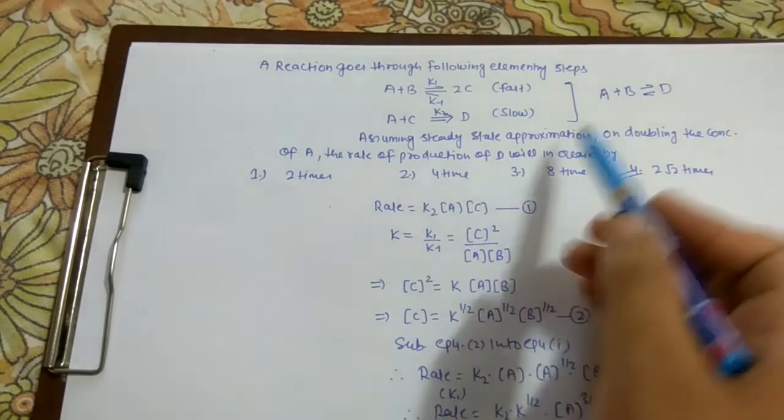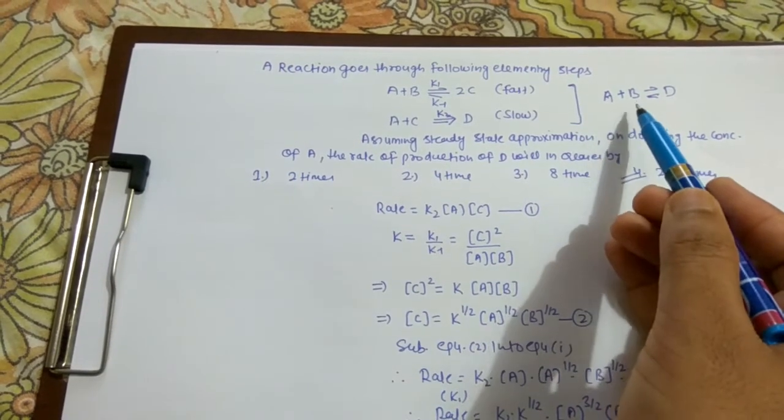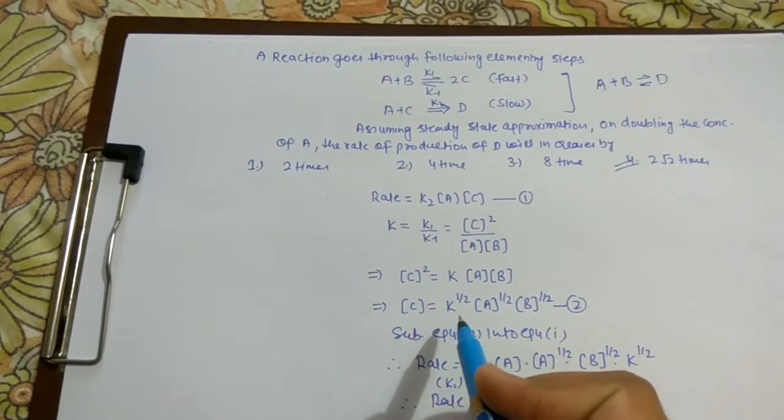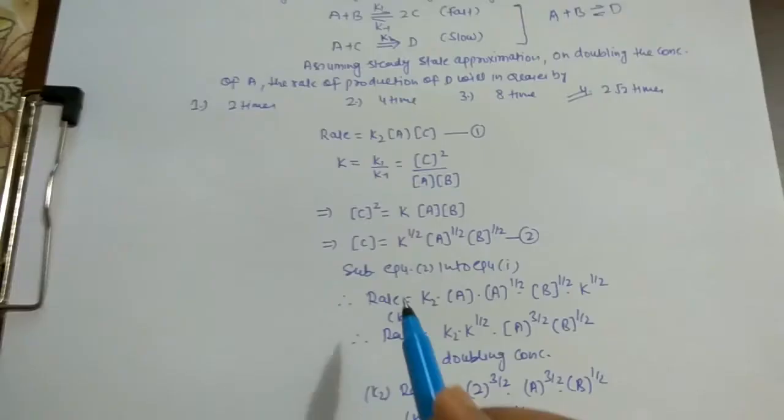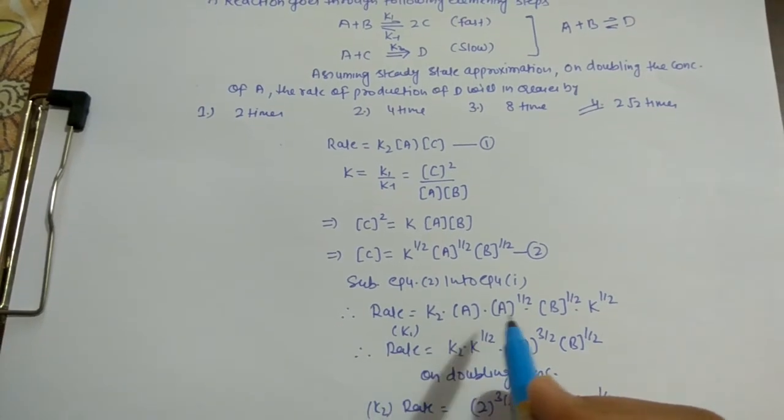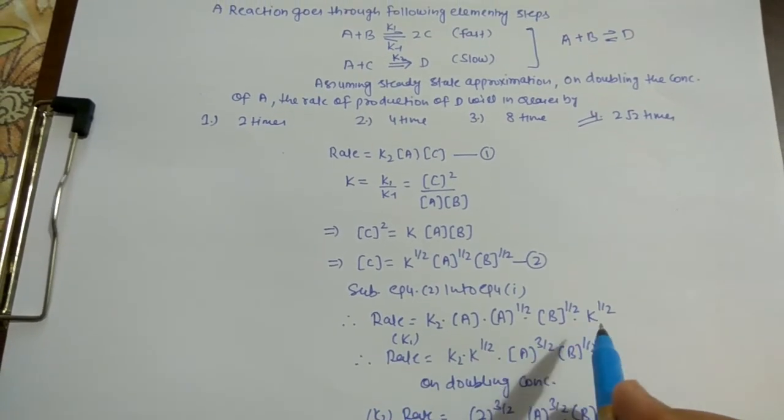So what we will do is substitute the value of C in equation 1. Then the rate of reaction will become: Rate = k2 [A] [A]^(1/2) [B]^(1/2) K^(1/2).